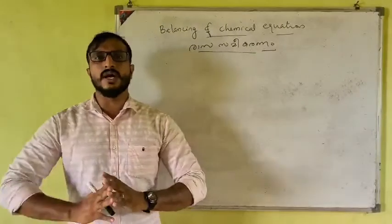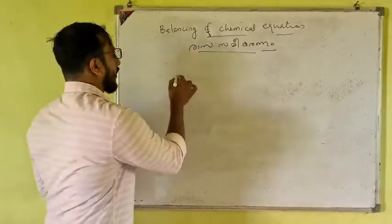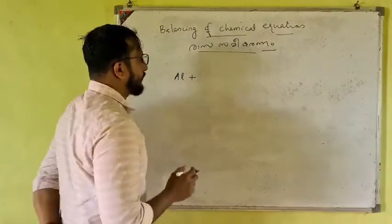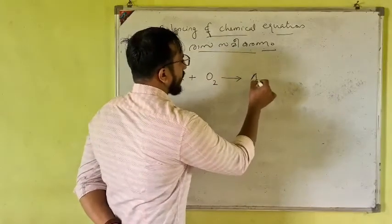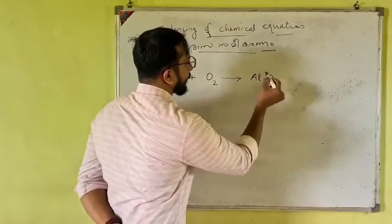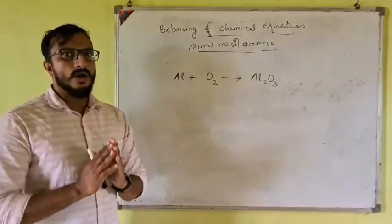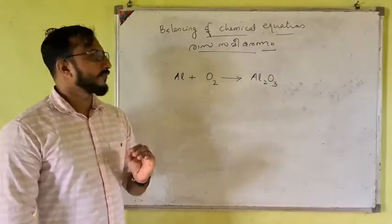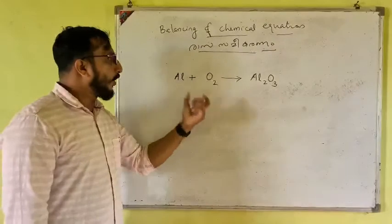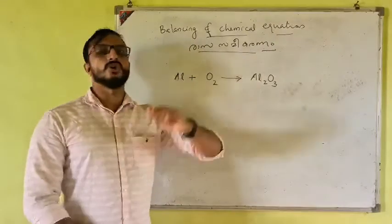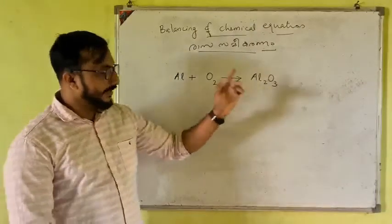Let's check: aluminium reacting with oxygen gives aluminium oxide. The equation is Al + O2 gives Al2O3. There are 2 aluminium on the product side, 2 oxygen in O2, and 3 oxygen in Al2O3. We need to balance this equation.